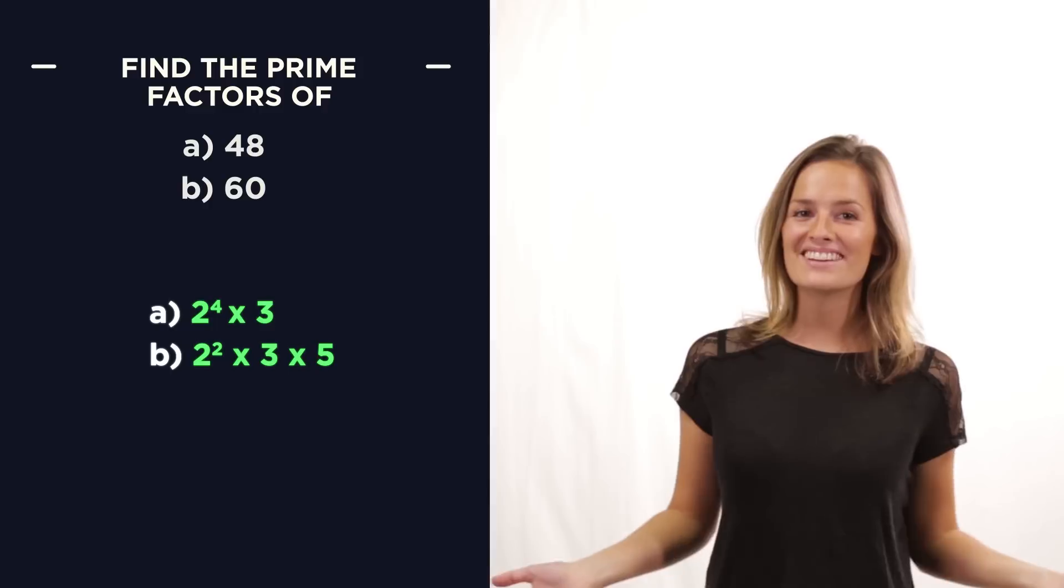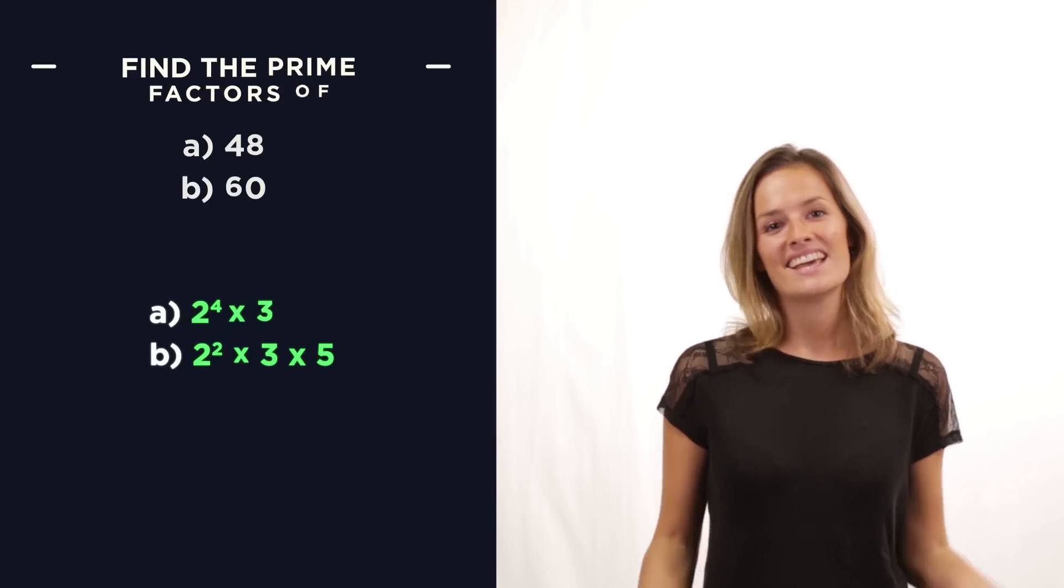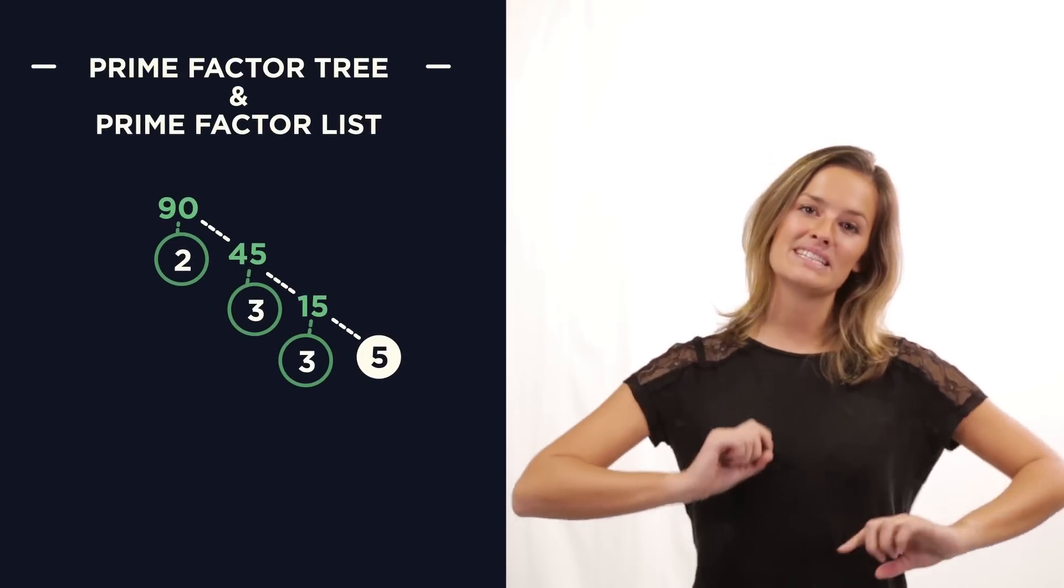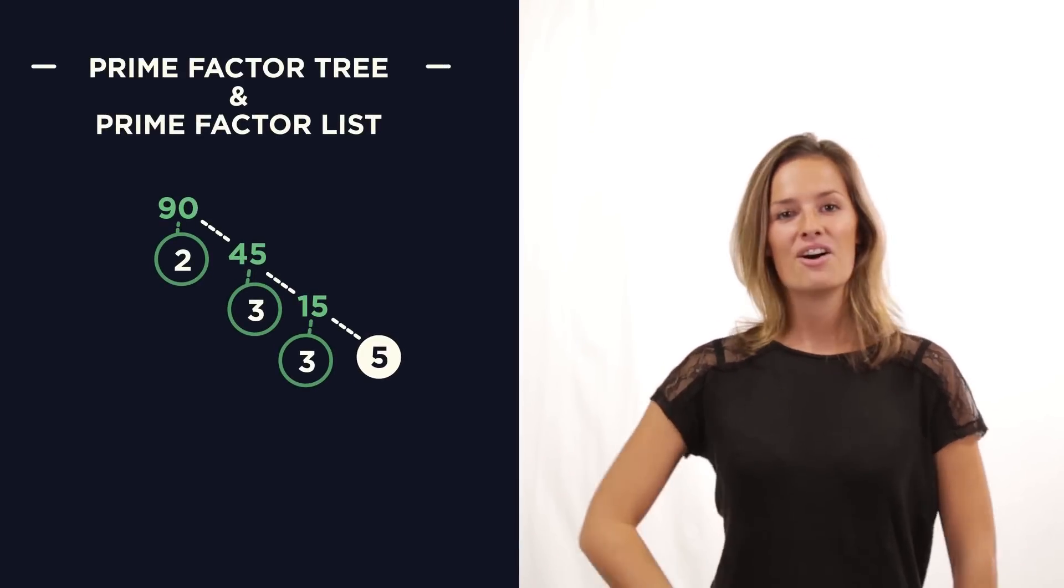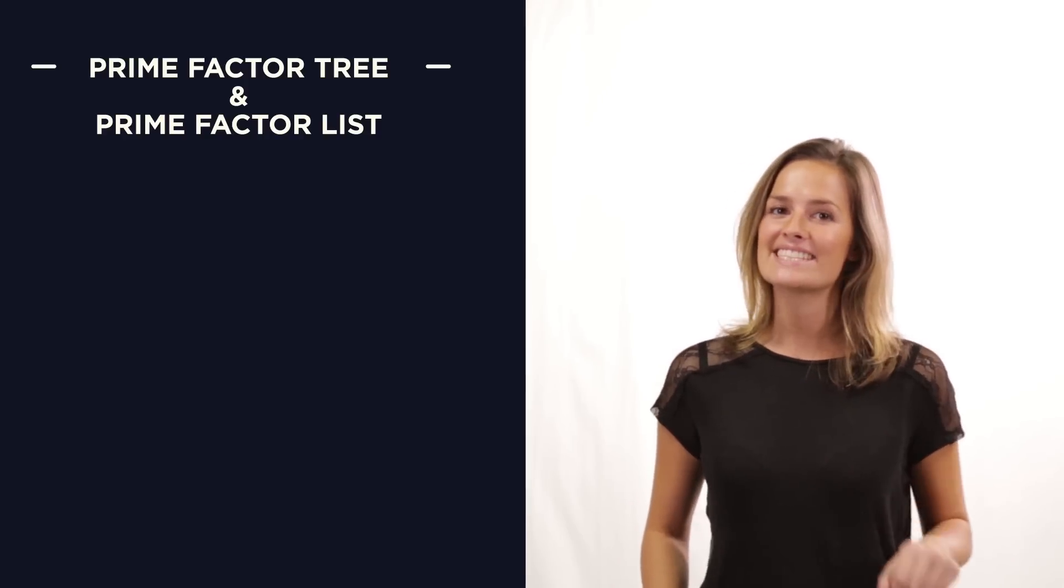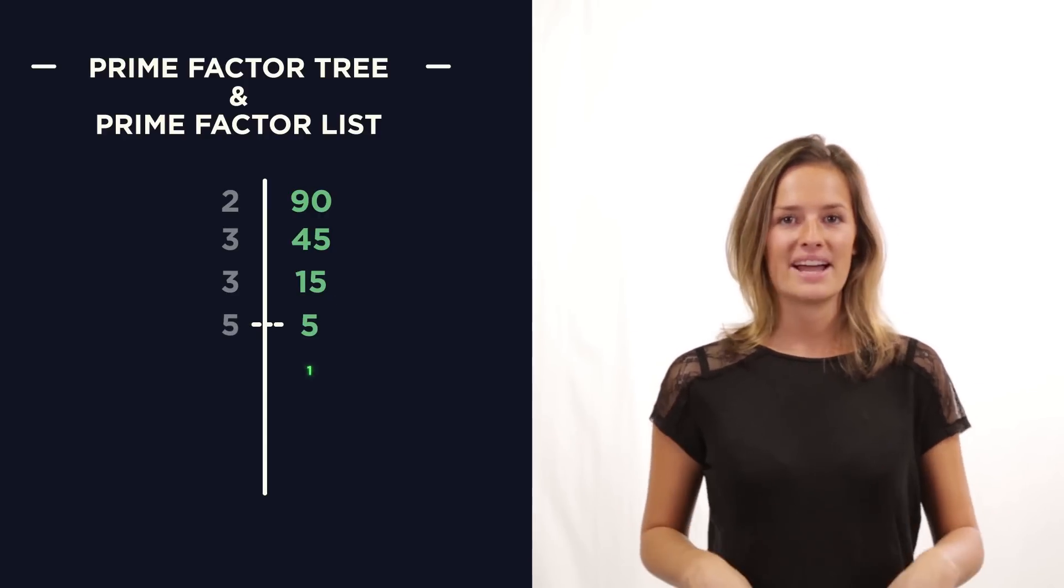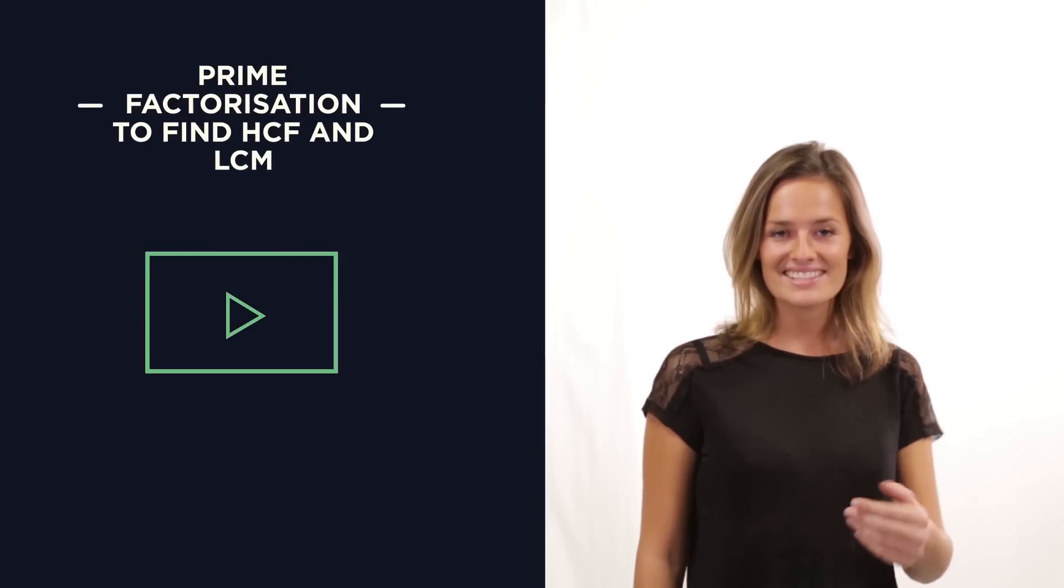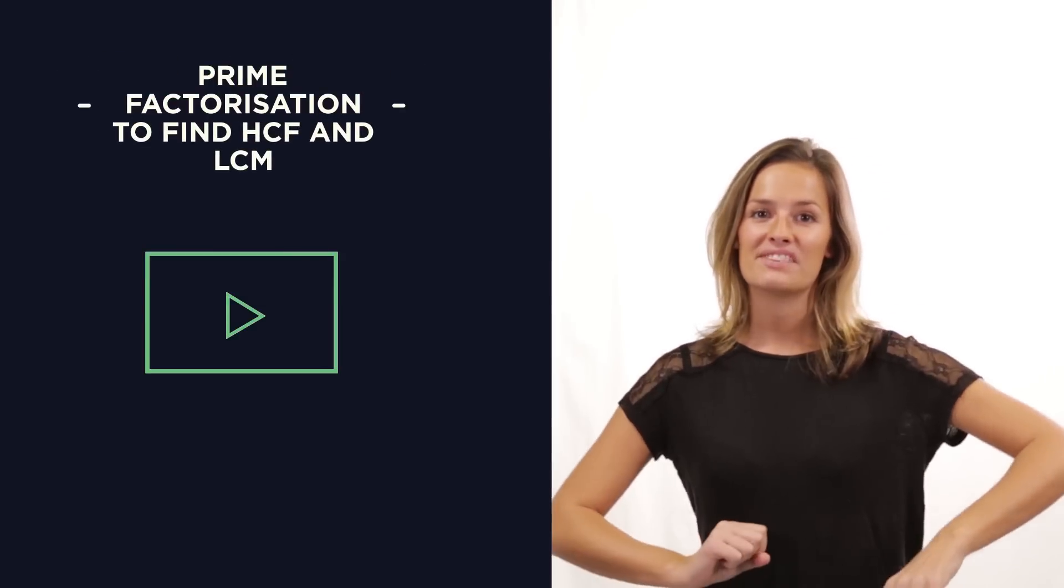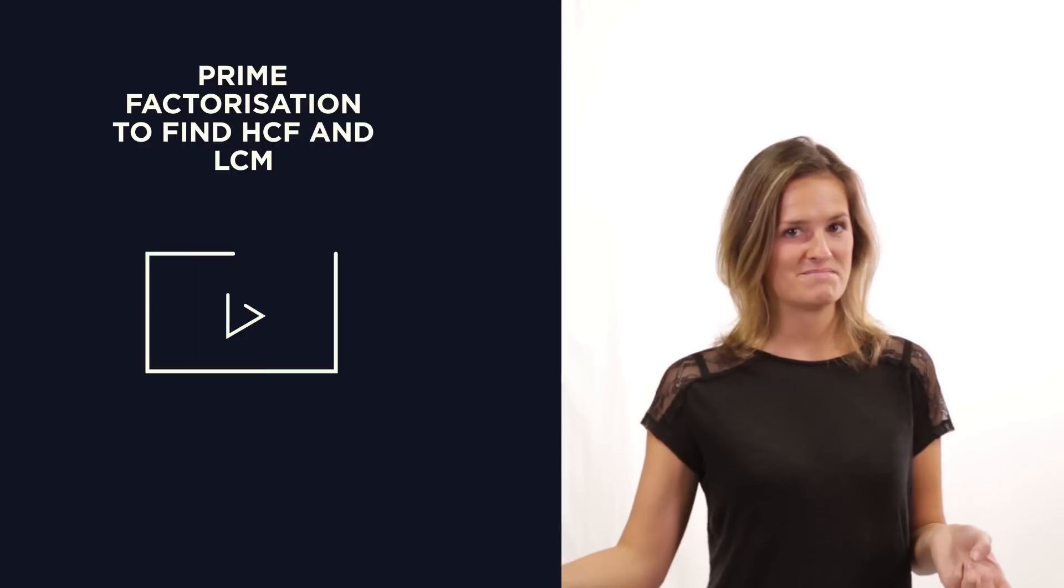That's all there is for finding prime factors. If you're using the prime factor tree, just remember to keep going all the way until you end up with 2 prime factors. Or, if you prefer the list, keep going until you end up at 1. In another video, we'll discover how to use prime factorization to find the highest common factor and the lowest common multiple really easily, even for massive numbers.